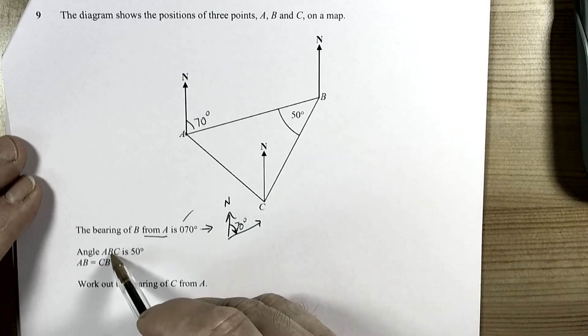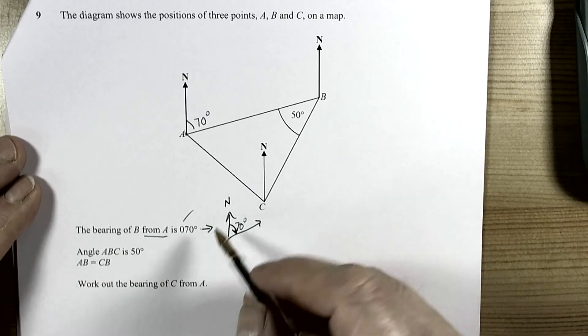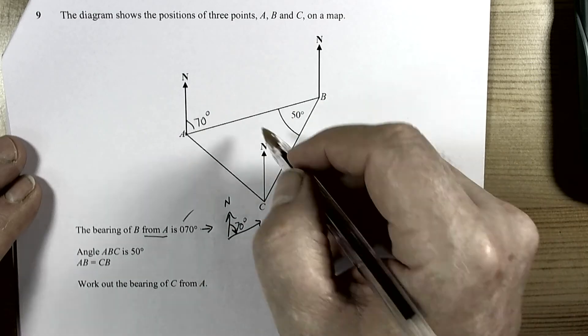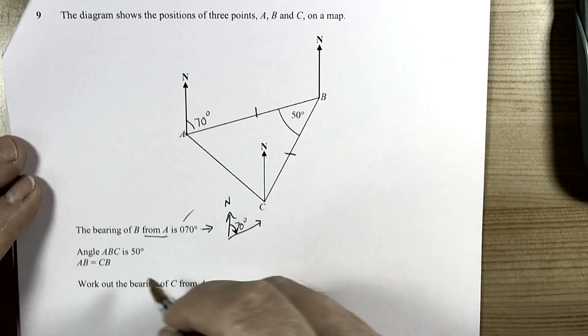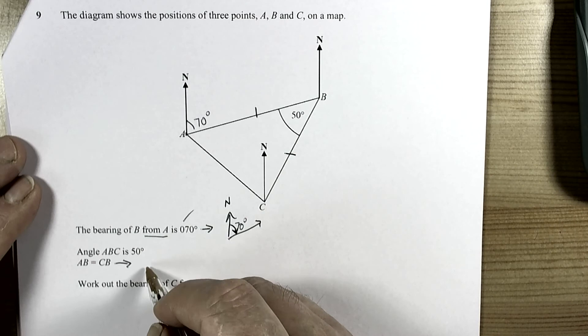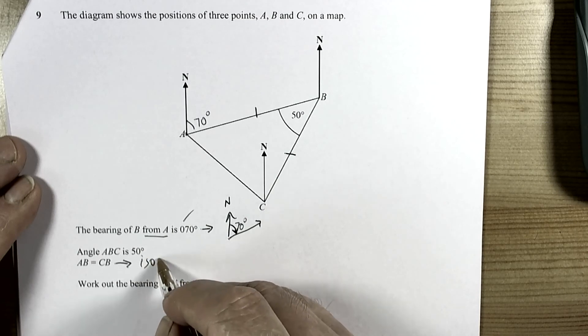Angle ABC is 50 degrees and it's saying that AB equals CB. So AB equals CB. So we put dashes through those because they're of equal length. So this is telling us that we're dealing with an isosceles triangle.